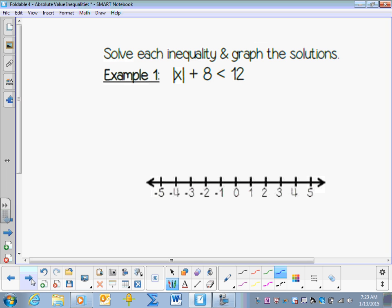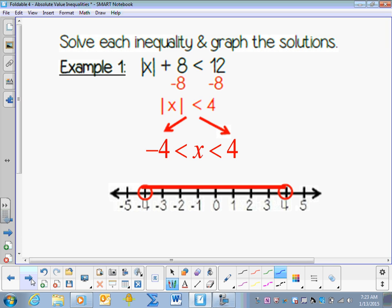Solve each inequality and graph the solutions. Remember to first isolate the absolute value sign. So we subtract 8 on both sides and we end up with negative 4 is less than x, which is less than 4.